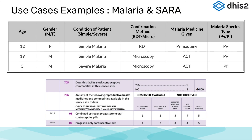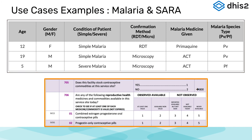Let's walk through a couple of examples and explain how different moving parts come together to form an overall use case for the event data model. First, we will use a real-life use case that has been implemented for collecting data on a malaria case line list — we will refer to this example in the course several times. The second use case we will use in this course is the Service Availability and Readiness Assessment, or SARA for short, a health facility assessment tool designed to assess and monitor the service availability and readiness of the health sector.